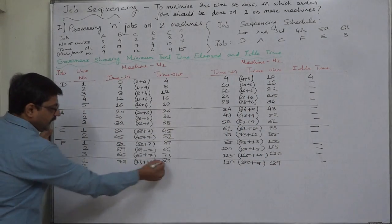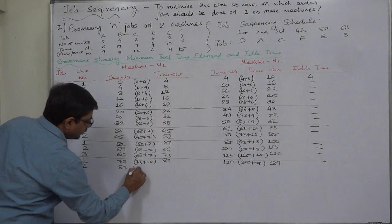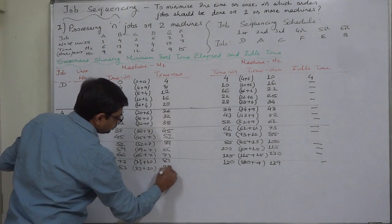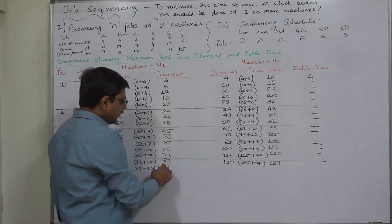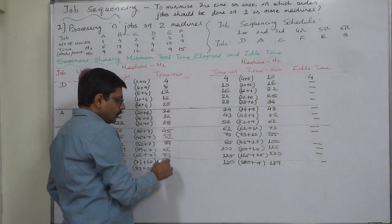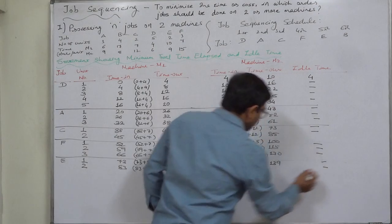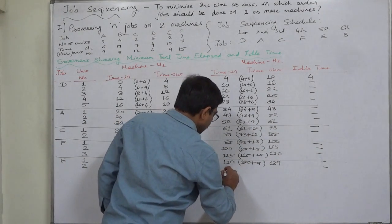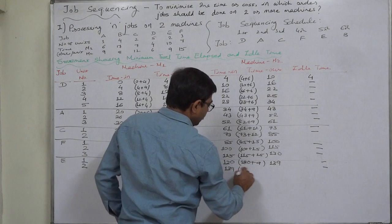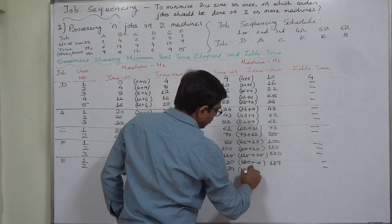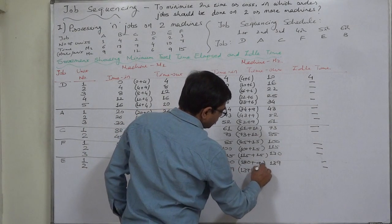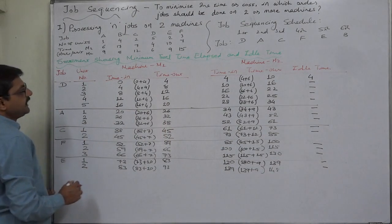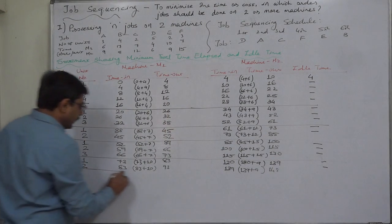Second unit of E: time in on machine 1 is 83, 83 plus 10 equals 93. Again the unit or job is waiting, not the machine, so no idle time. 93 or 139, whichever is later: 139 becomes time in, 139 plus 9 equals 148 for time out. E has only 2 units, so job E is also over.